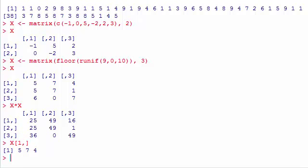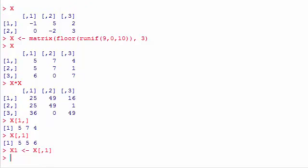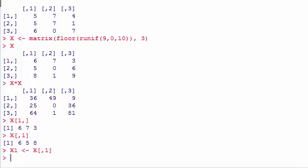Same thing goes if you want to extract let's say the first column like this. Again it will give you a vector and not a 3 by 1 matrix. If I want it to be a 3 by 1 matrix then I can use the dim function. So for example let's assign the first column of X to the symbol X1. X1 is now a vector not a matrix.